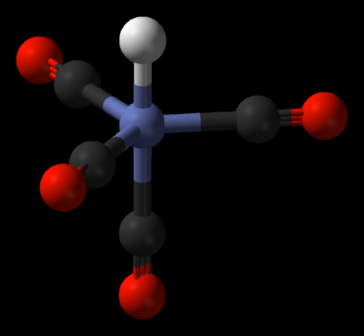Ligands are classified in many ways, including charge, size, the identity of the coordinating atoms, and the number of electrons donated to the metal. The size of a ligand is indicated by its cone angle.